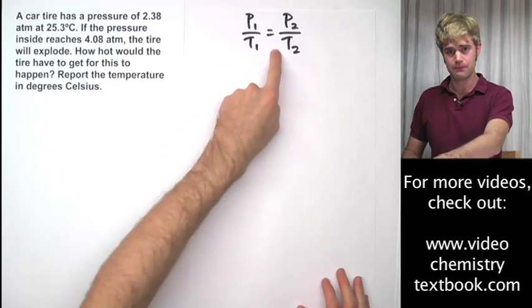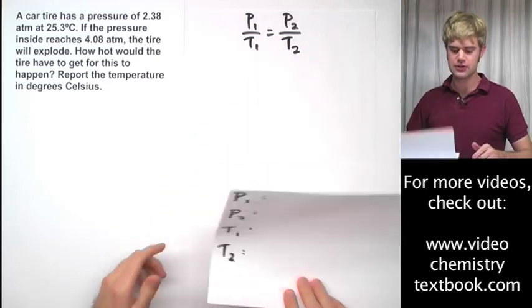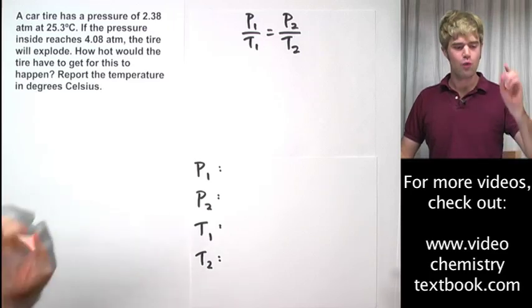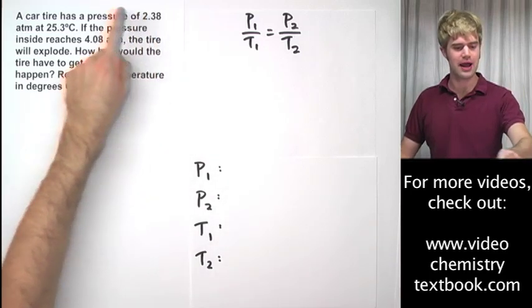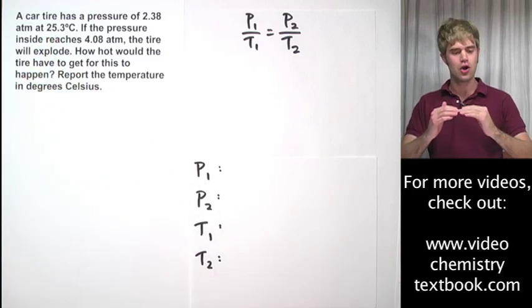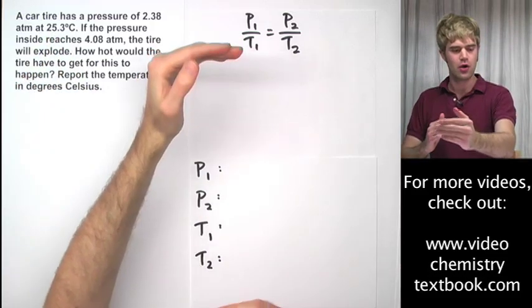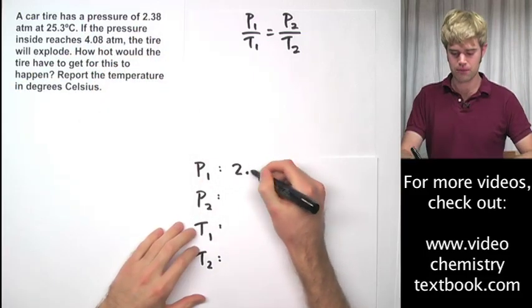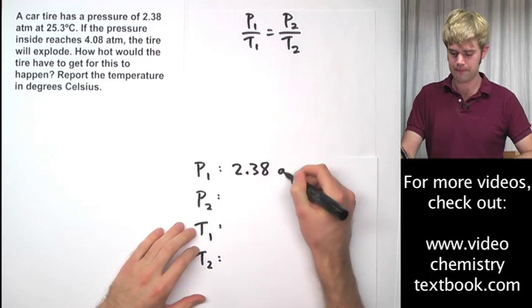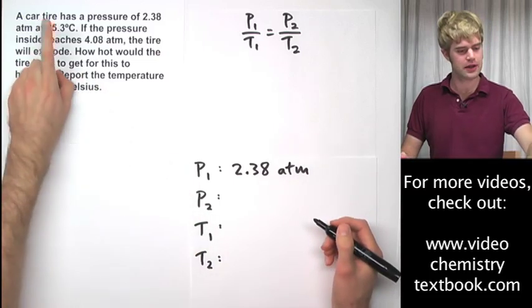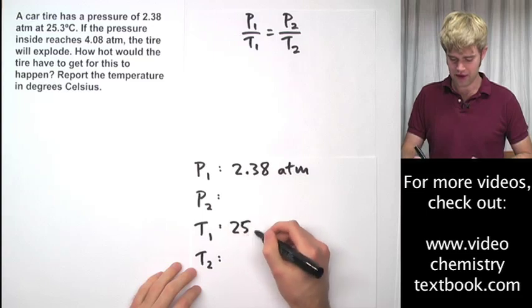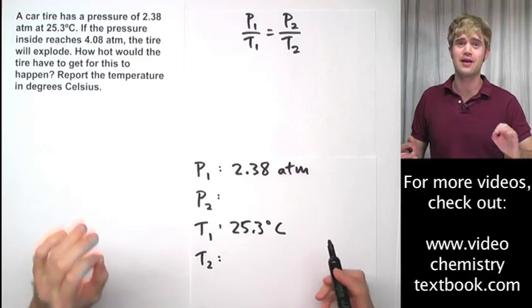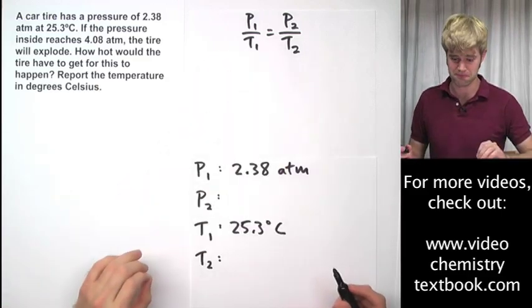So again, we're going to be starting with this equation. The first thing let's do is let's get our four variables straight. So we're starting with this initial pressure and this initial temperature and then we're going to raise the temperature which is going to cause this increase in pressure. So our initial pressure is going to be 2.38 ATM and our initial temperature is going to be 25.3 degrees Celsius, but remember we're going to have to end up converting that into Kelvin in a minute before we can use it in the equation.